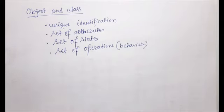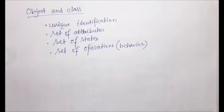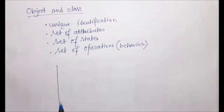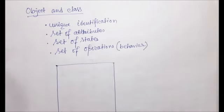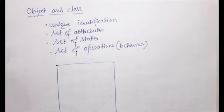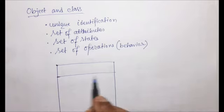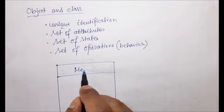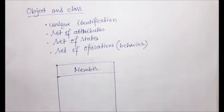If I want to declare a class using a class diagram, for example in our library management system where many members are present, one of the classes may be 'Member'. We write the name of the class within a rectangular box. Member is a class, and we know that a class consists of a set of attributes and a set of functionalities.